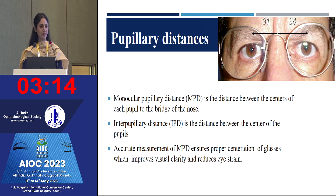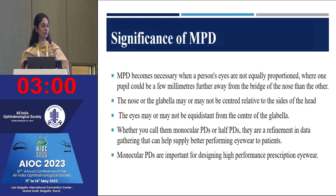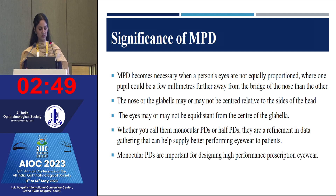Accurate measurement of MPD ensures proper centration of glasses, which improves visual clarity and reduces eye strain. MPD becomes necessary when a person's eyes are not equally proportioned, wherein one pupil could be a few millimeters away in comparison to the other. The nose or the glabella may or may not be centered relative to the sides of the head, and the eyes may or may not be equidistant from the center of the glabella.